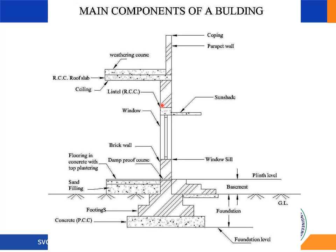In framed structures, beams are important horizontal members that connect columns on both sides. They are made of RCC. The main function of the beam is to take the load from the slab and transfer it to the column. Beam-to-column connection is a direct support, while beam-to-beam connection is called indirect support. Beams can also be used as cantilever beams. The minimum dimension for a beam is 230 mm × 230 mm.